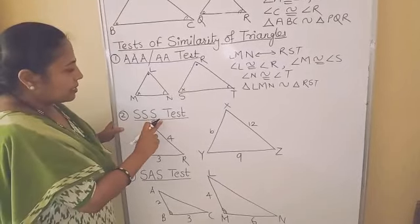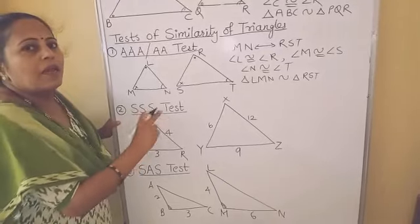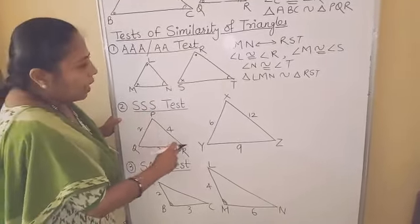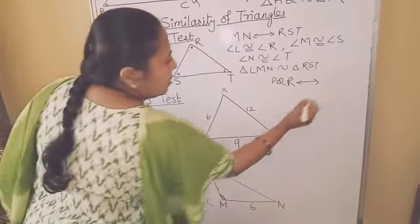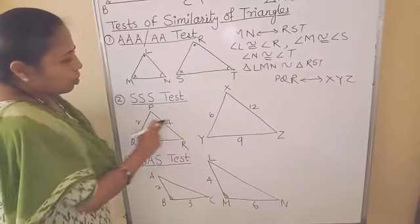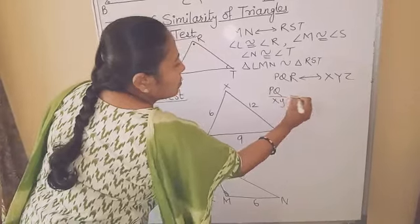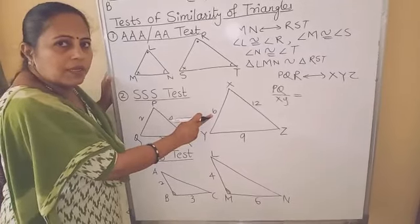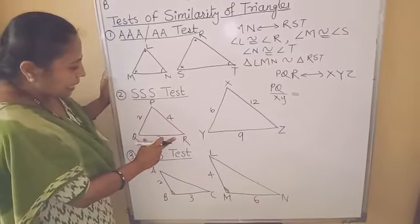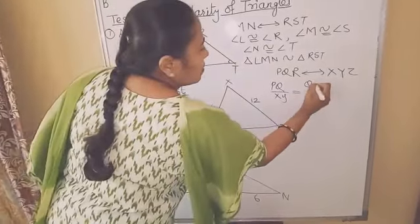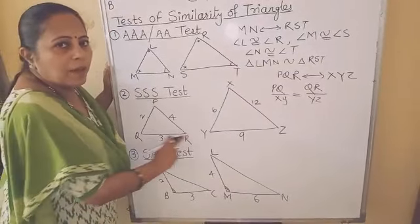The second test is the SSS test, meaning corresponding sides of two triangles with any one-to-one correspondence are in proportion. Here, PQR corresponds to XYZ. If you find the ratio of the corresponding sides: PQ upon XY gives 2 upon 6, which equals 1 upon 3. The ratio of the second side, QR upon YZ, is 3 upon 9 — simplifying, you again get 1 upon 3.